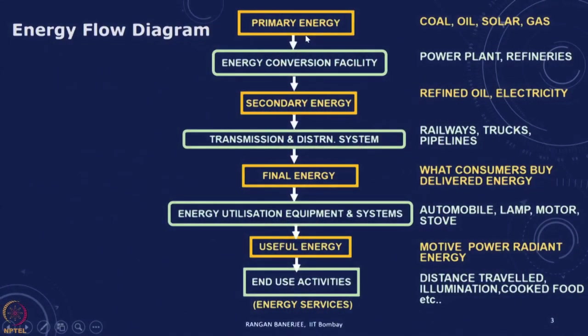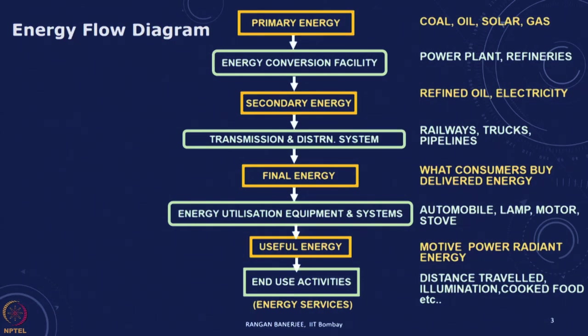The energy that is available in nature is primary energy. This is the energy sources like coal, oil, solar, natural gas, wind. The energy available in nature is not directly something that we can use. We take that energy and convert it in an energy conversion facility. We first take the coal, mine it, wash it, transfer it to a power plant and then we get the secondary energy.